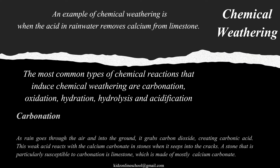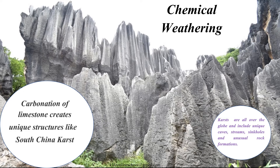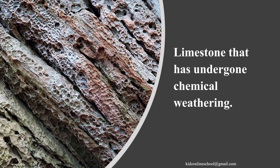The most common types of chemical reactions that induce chemical weathering are carbonation, oxidation, hydration, hydrolysis, and acidification. Carbonation: as rain goes through the air and into the ground, it grabs carbon dioxide, creating carbonic acid. This weak acid reacts with the calcium carbonate in stones when it seeps into the cracks. A stone that is particularly susceptible to carbonation is limestone, which is made of mostly calcium carbonate. The carbonation of limestone creates unique structures like South China karst. Karst formations are found all over the globe and include unique caves, streams, sinkholes, and unusual rock formations. You can also see limestone that has undergone chemical weathering.